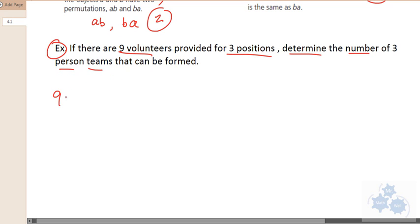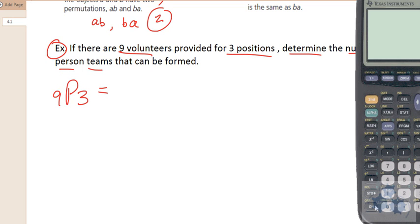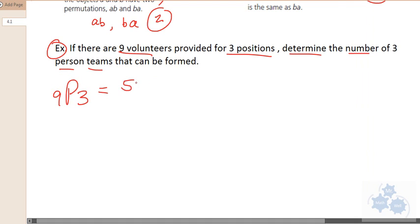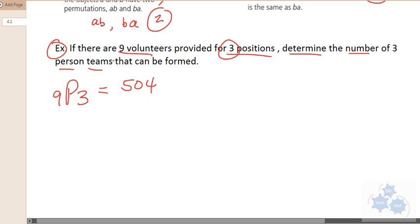If order mattered, then we would do nine pick three. And nine pick three, you get on your calculator, and you go nine, and you find your permutation function, and you pick three, and that's five hundred and four. So five hundred and four different permutations for three people picking from nine.